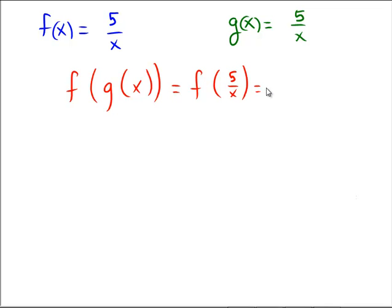F of g of x is equal to f of 5 over x, which would be equal to 5 over (5 over x). And of course, dividing by a fraction is the same as multiplying by the reciprocal. So what do we get when we do the reciprocal here? Would be 5 multiplied by x over 5. Hey, it looks like these might be inverses also.